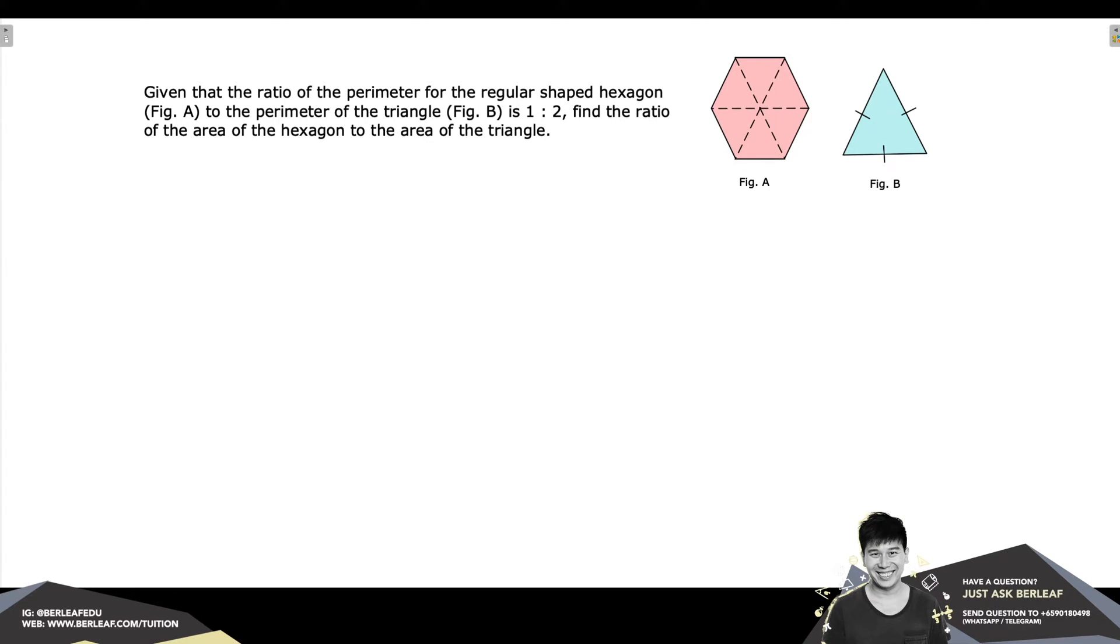In this question, we have two figures, figure A and figure B, where figure A is a regular shaped hexagon and figure B is a triangle. We are given that the ratio of their perimeter for figure A to figure B is 1 to 2. So let's write it down. The perimeter in terms of units will be 1 unit for figure A and 2 units for figure B.